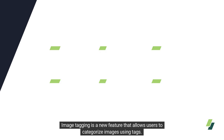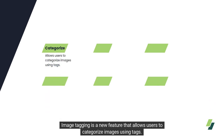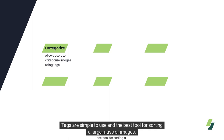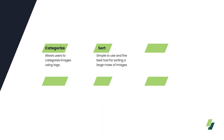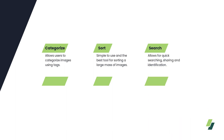Image tagging is a new feature that allows users to categorize images using tags. Tags are simple to use and the best tool for sorting a large mass of images. They allow for quick searching, sharing, and identification.